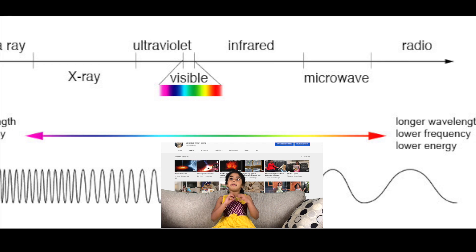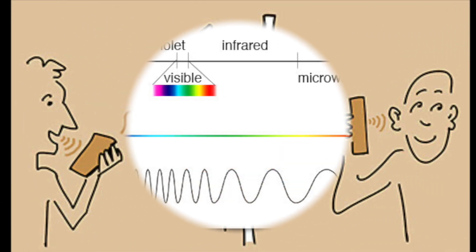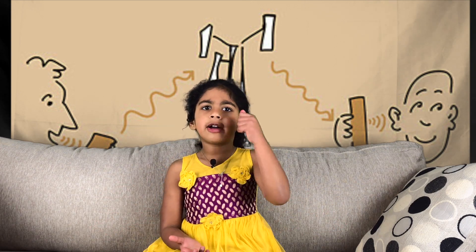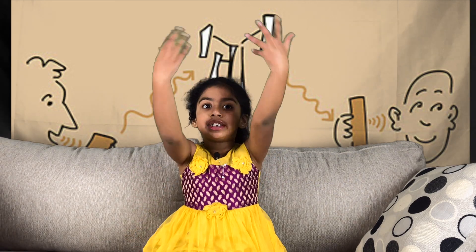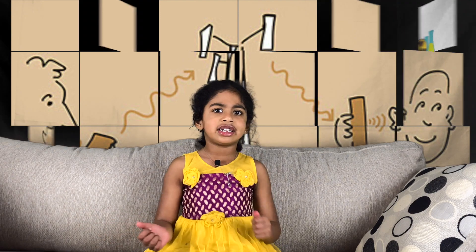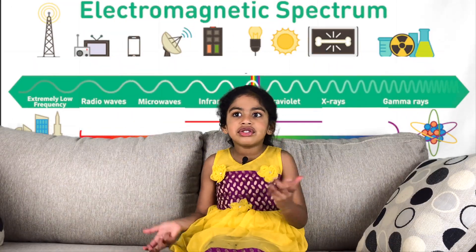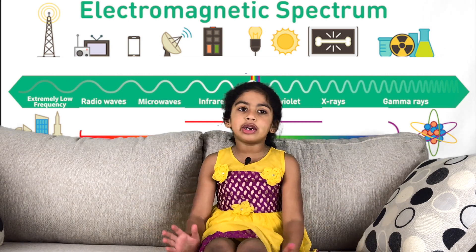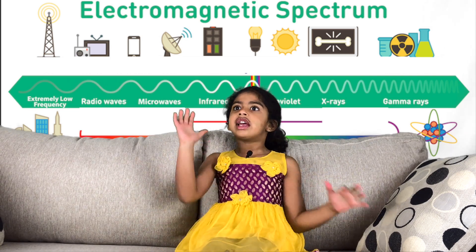Have you ever wondered — if mom sends a message to dad, how does it arrive, since their phones are not connected? If mom is in the house and dad is in his office, how does dad get that message within a second? This is how electromagnetic waves work.